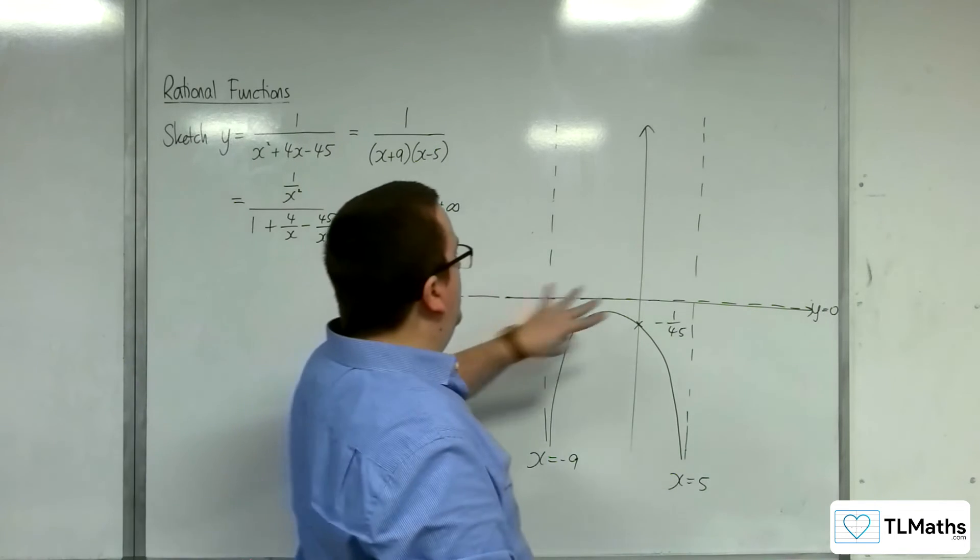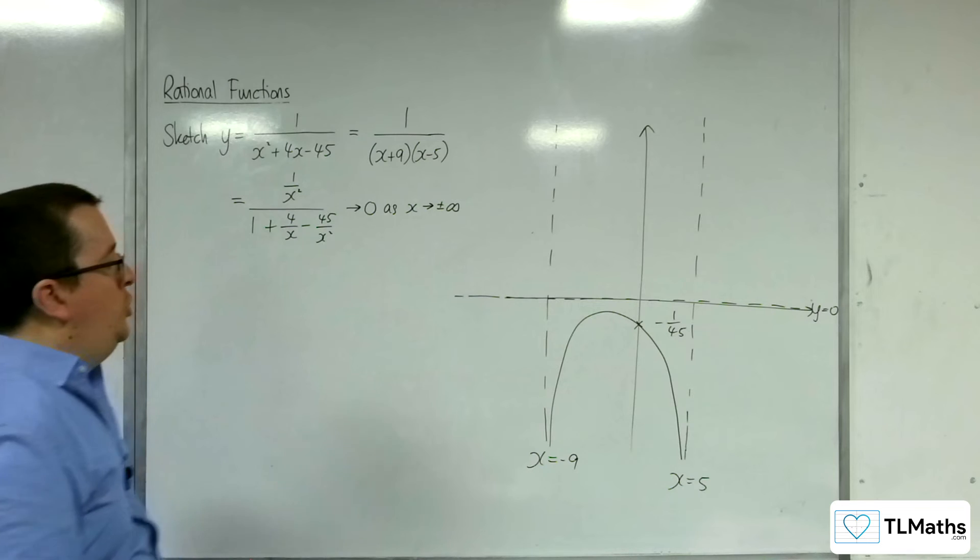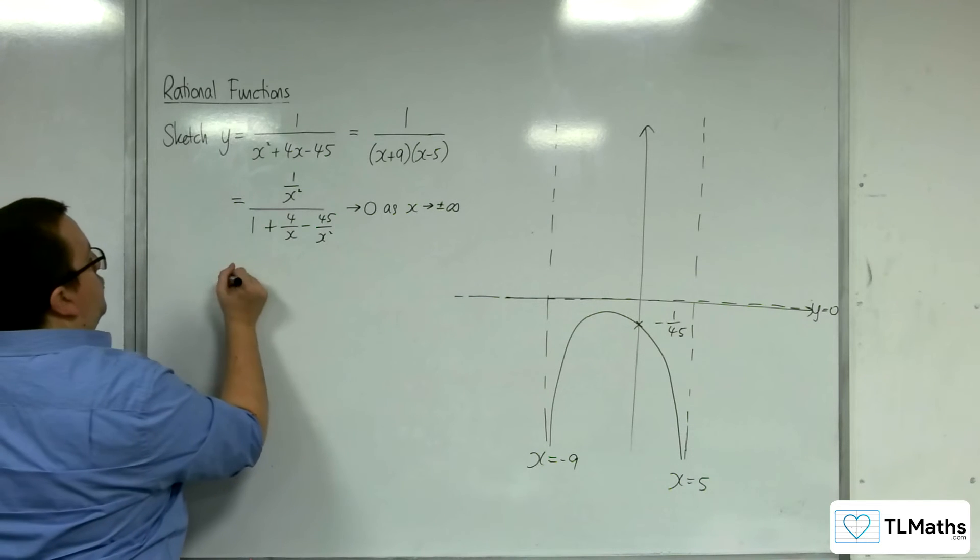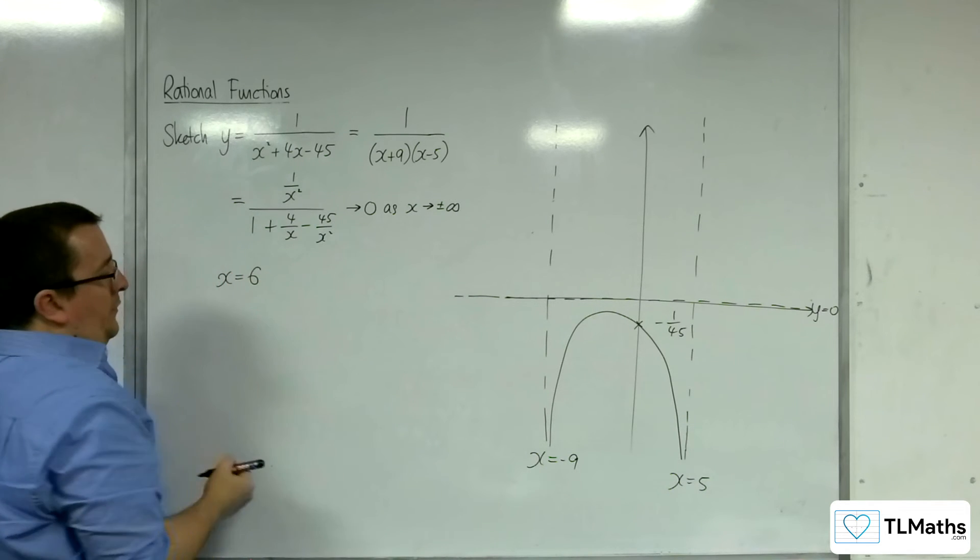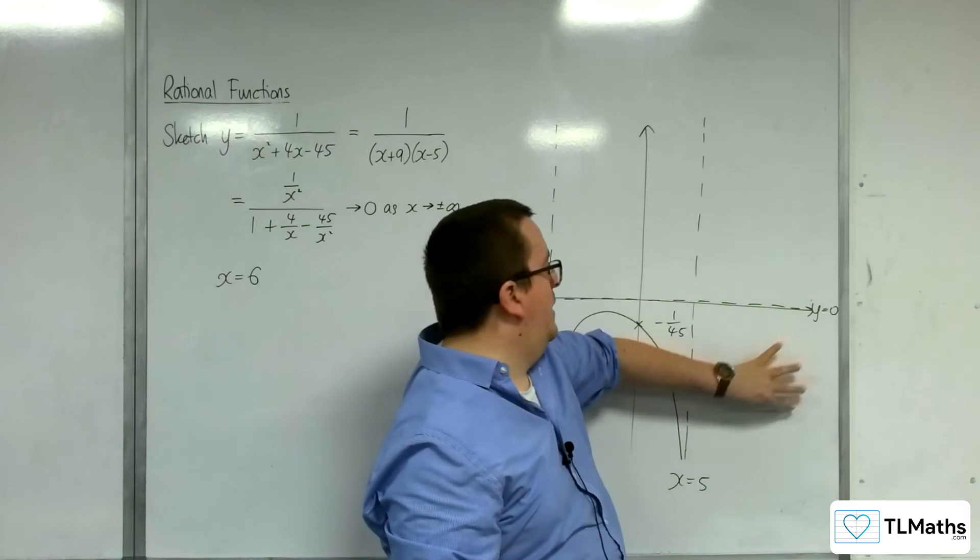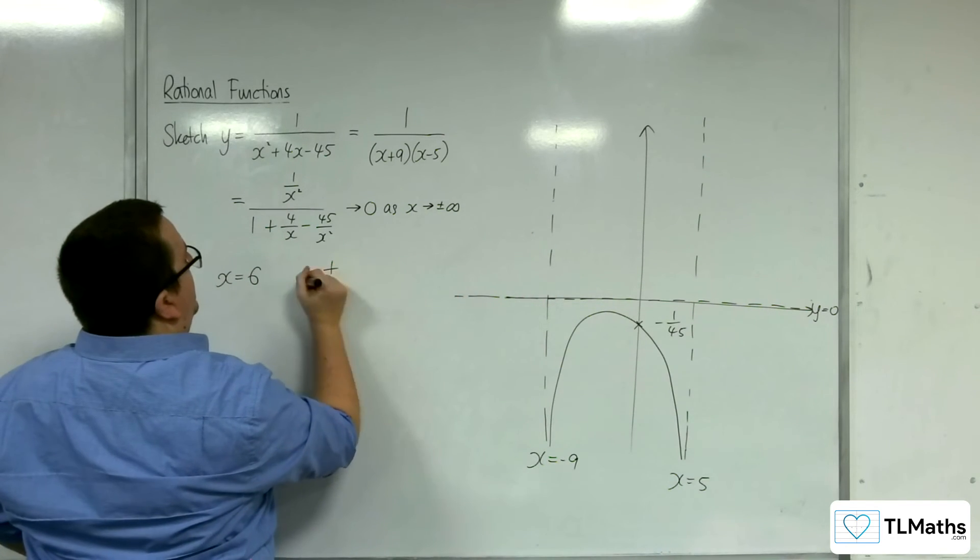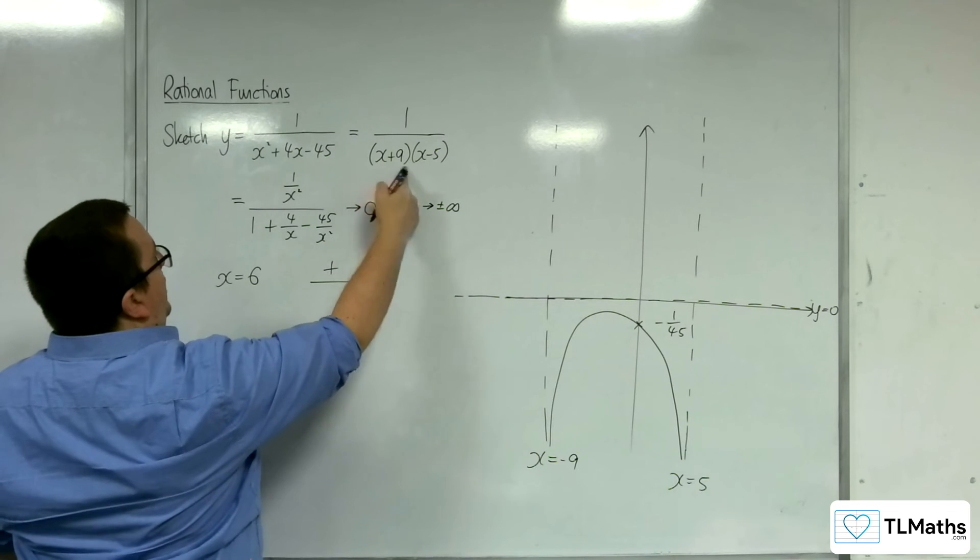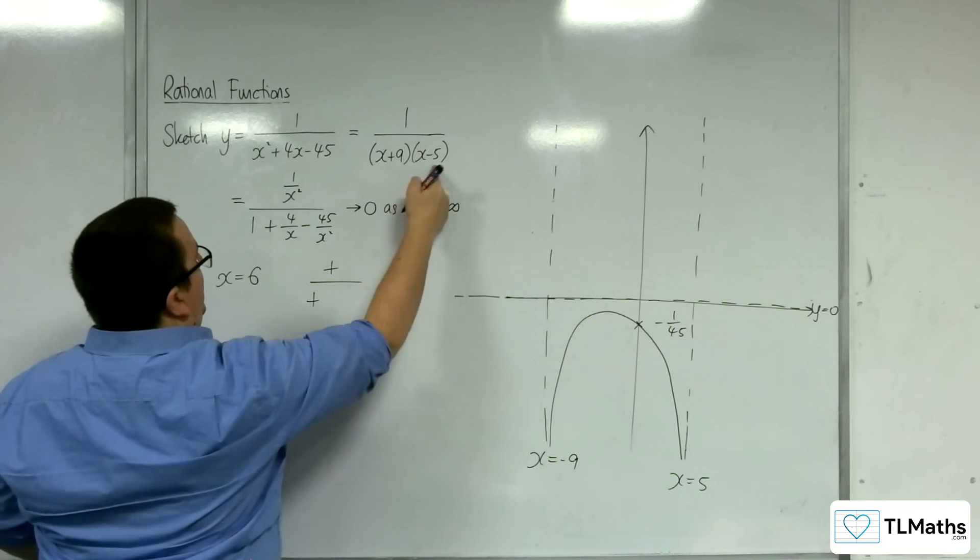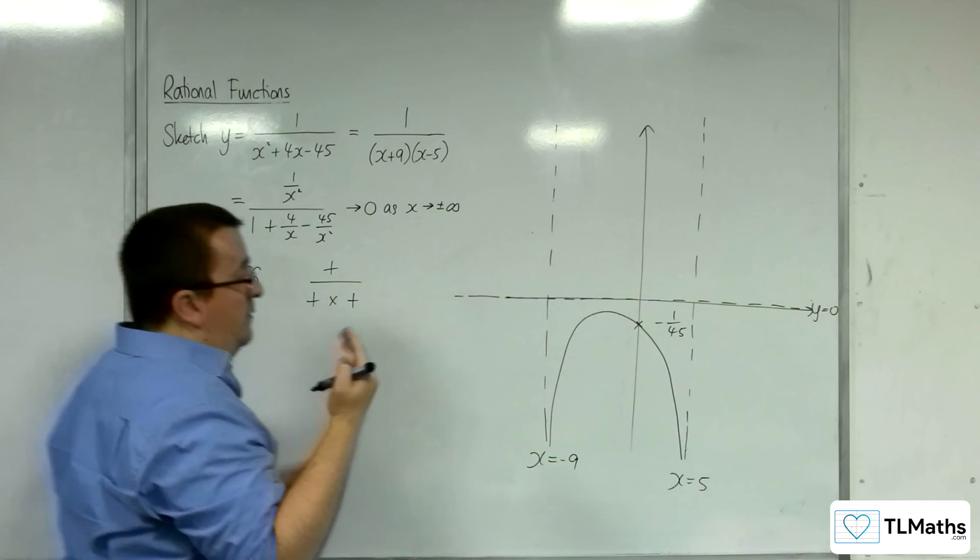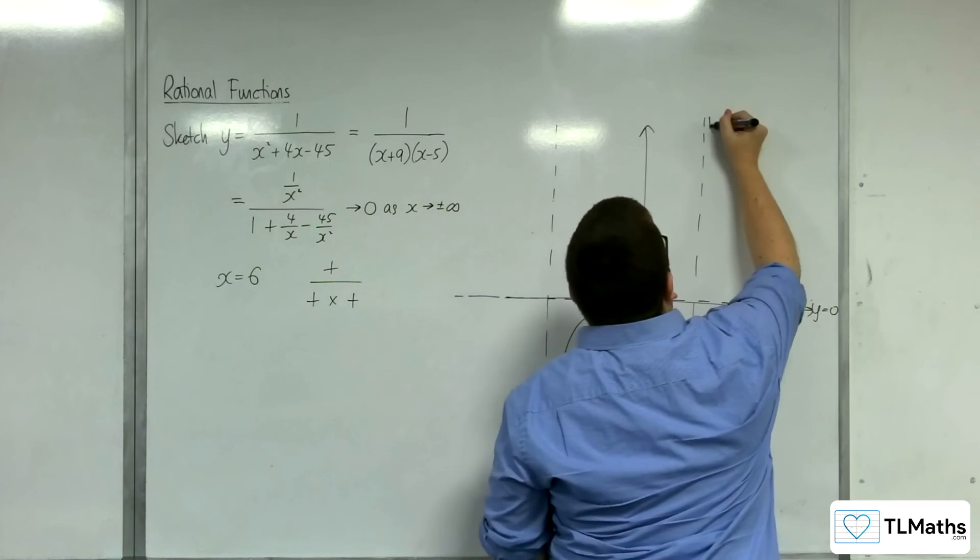As for the other two parts of the graph, we would need to check. So if we try x equals 6 and have a look, is it down here or is it up here? So on the top we've got positive because it's just 1. Then we've got 6 plus 9 which is positive. 6 take away 5 is positive. And so positive over positive. So we're up here.